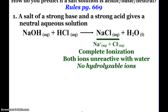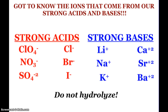All of our ions that come from our strong acids and bases do not hydrolyze. This chart is really important — it shows which ions come from our strong acids and bases. From our strong acids, we get all of these negative ions, and from our strong bases, we get those positive ions. These do not hydrolyze, and they're going to be important for predicting what type of salt solution we will have.